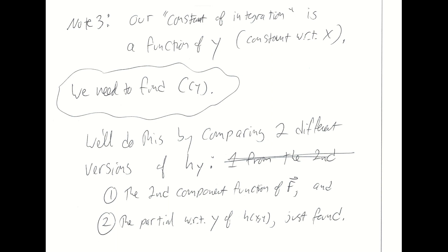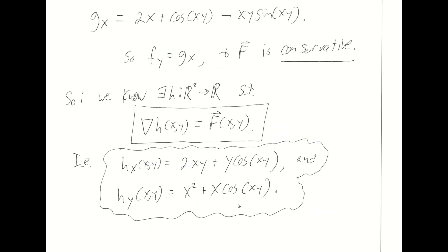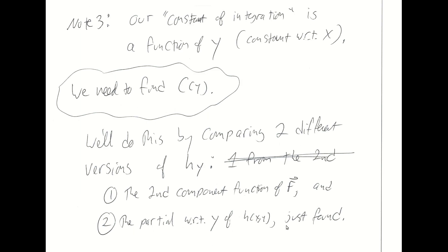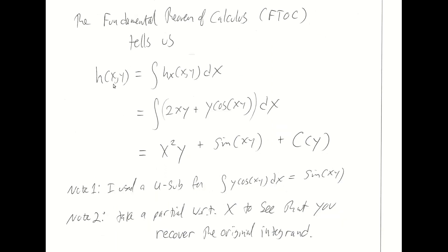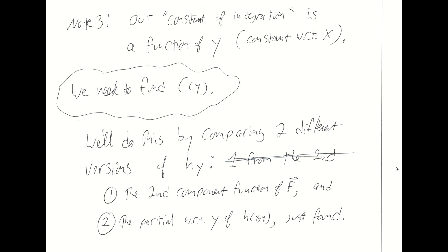The first expression for h sub y comes from my original representation of big F hat. Big F hat was the gradient of little h, so its second component function is the partial of little h with respect to y. So the second component function of big F hat is a version of h sub y that I've had since the beginning of the problem. I'm now going to have another version of h sub y, which is the partial with respect to y of the expression for little h that I just found. Equating those two should allow me to solve for c(y).